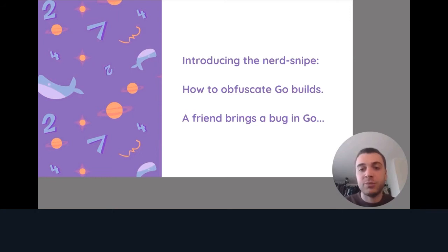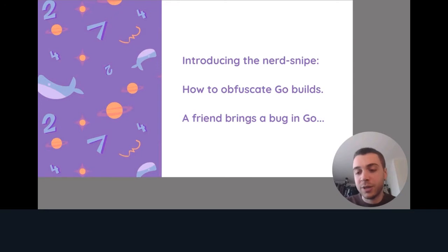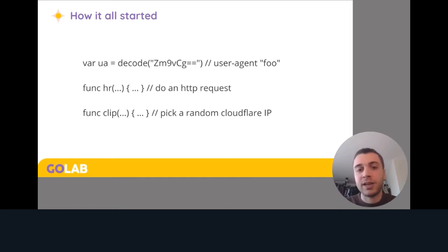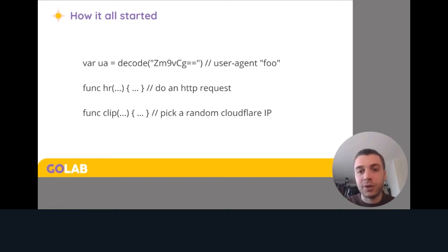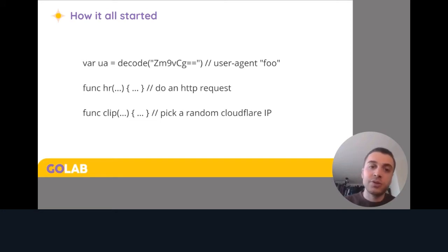The nerd snipe that got me here is how to obfuscate Go builds. This began with a friend bringing a book in Go to me, and when I looked at the code, it looked kind of weird — not code you would normally write. The reason it was written this way is so that somebody trying to reverse engineer the binary would have a harder time figuring out what was happening. For example, the user agent string is actually encoded in Base64 and decoded at init time, and function names are shorter than usual to conceal what they do.